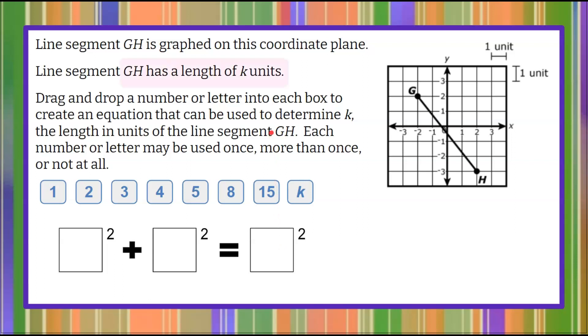Welcome back. Here we have GH on the coordinate plane that has a length of k units. So this diagonal length GH is a measure of k. Now we want to recognize that we're filling in this formula here.